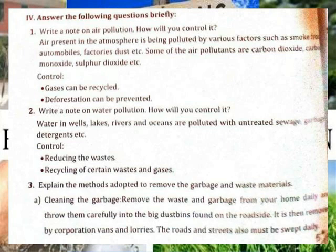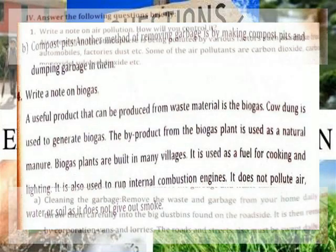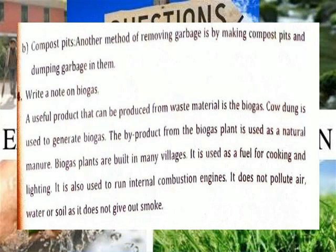Explain the methods used to remove garbage and waste materials. Collecting the garbage: remove the waste and garbage from your home daily and throw them carefully in the big dustbin found on the roadside. It is then removed by corporation vans and lorries. The roads and streets are swept clean daily. Another method of removing garbage is man-made compost pits and dumping garbage in them.